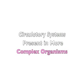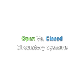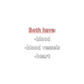Circulatory systems are present in more complex organisms. There are two basic types in animals: open and closed circulatory systems. Both types of systems have blood, blood vessels, and a heart.